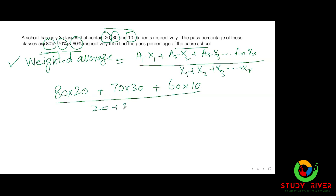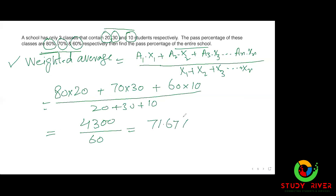اور ان سب کو divide کرنا ہے: 20 + 30 + 10 = 60 پہ۔ جب آپ multiply کر کے جمع کریں گے تو نمبر آتا ہے 4300، divide by 60۔ And the answer comes to 71.67 percent. یہ اس کا answer ہے۔ (And divide all of these by 20+30+10=60. When you multiply and add, the number is 4300 divided by 60. And the answer comes to 71.67 percent. This is its answer.)